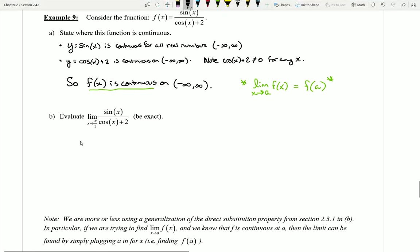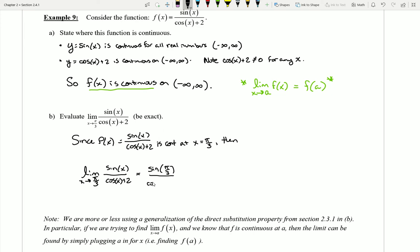Let me go ahead and express it in this way. I can say since f of x, which is equal to sine of x over the cosine of x plus 2, is continuous at x equals pi over 3, that's what I'm approaching, and I know it's continuous there because it's continuous everywhere, then when I go to calculate this limit I recognize that this is going to be exactly the same thing as actually just plugging in the value of pi over 3. I kind of get for free by continuity that direct substitution now is actually going to work for every function as long as it's continuous.